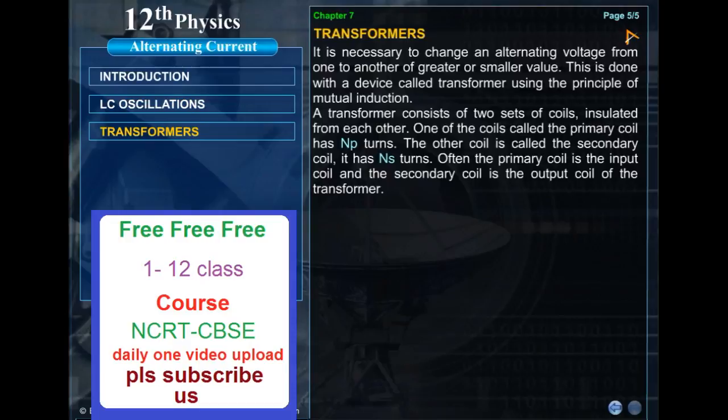It is necessary to change an alternating voltage from one to another for greater or smaller value. This is done with a device called transformer, using the principle of mutual induction. A transformer consists of two sets of coils, insulated from each other. One of the coils, called the primary coil, has NP turns. The other coil is called the secondary coil. It has NS turns. Often, the primary coil is the input coil and the secondary coil is the output coil of the transformer.